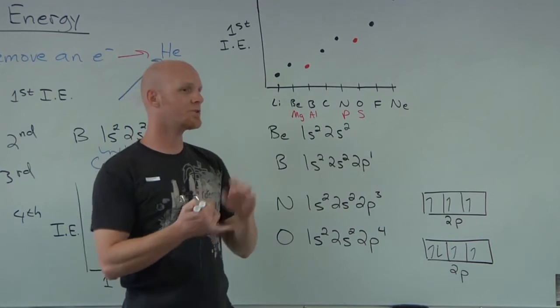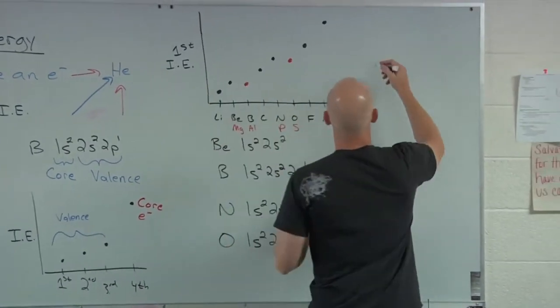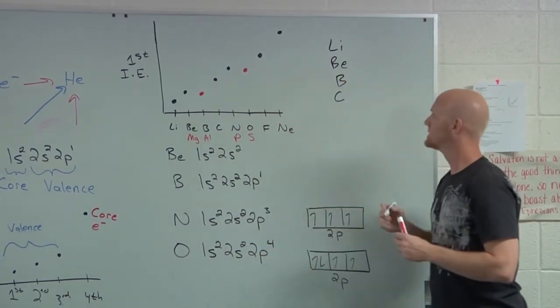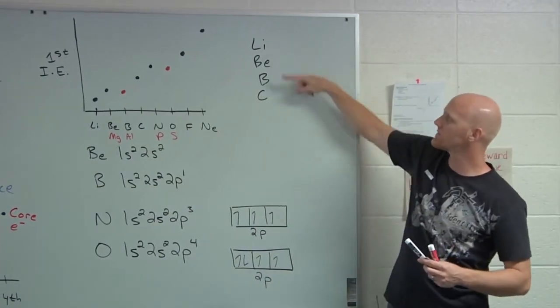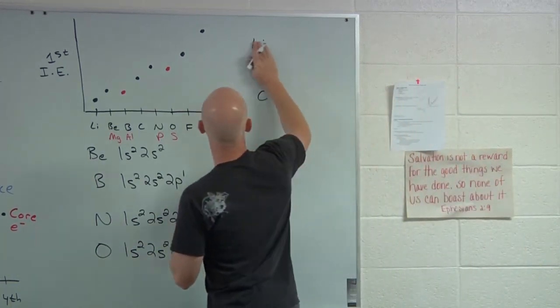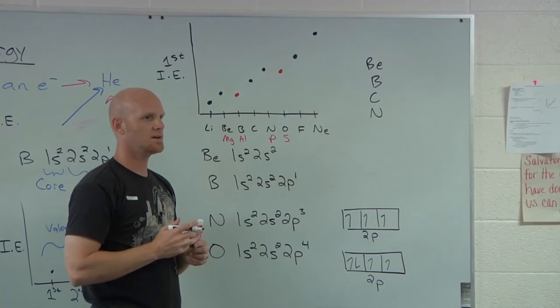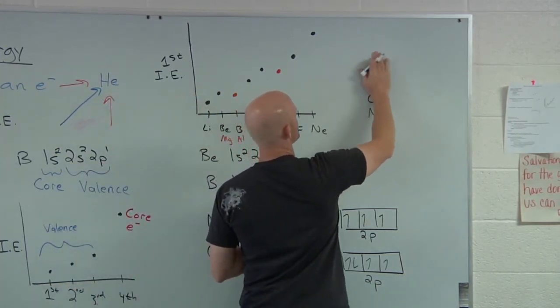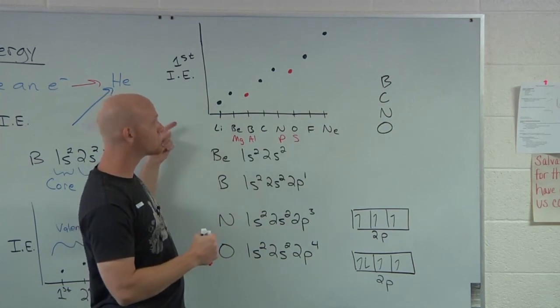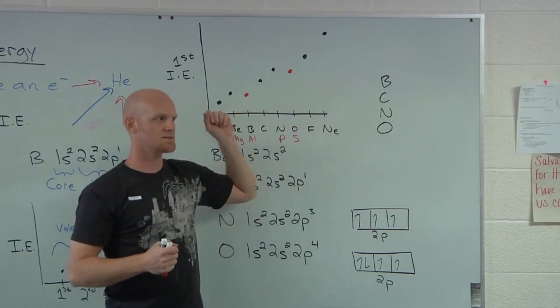What you should know, the general trend for first ionization energy, you should know the hiccups. If I gave you lithium, beryllium, boron, and carbon, and I said, which one has the highest first ionization energy? Carbon, it's a no brainer. What if I put nitrogen on there? Then nitrogen has the highest. What if I take off beryllium and I tack on oxygen? That's where you're going to get the exception question. Nitrogen still wins, higher than oxygen. The general trend says furthest to the right, but don't forget the hiccups where you might get an exception. We love asking those questions on a test because we didn't teach you the exceptions for nothing.